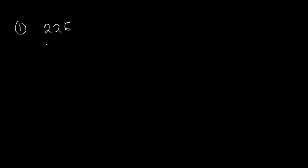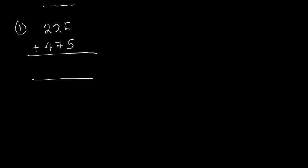Let's start our video tutorial by looking at an example. In example number one, we are to add the following: we have 226 and 475. To add three-digit numbers, we start adding from our right to our left, starting from the ones, to the tens, and then to the hundreds.